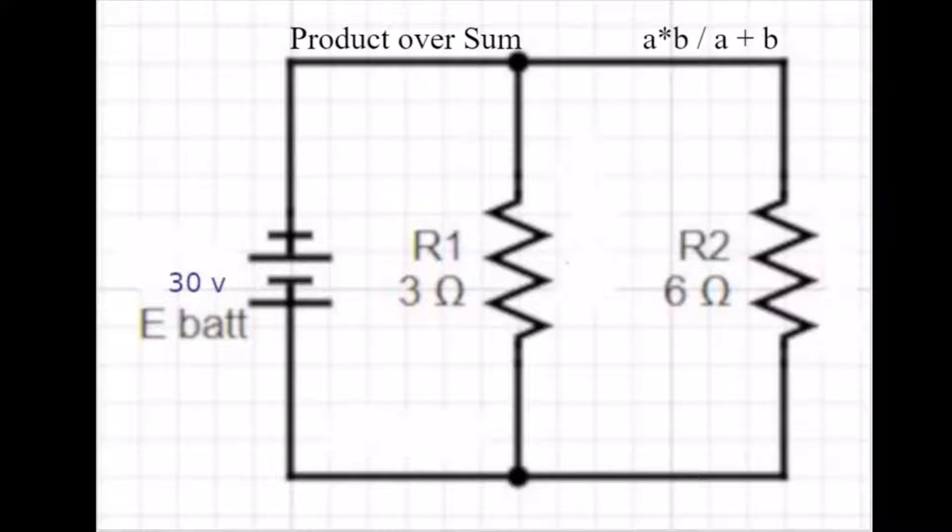If we're only dealing with two of them, there's a very simple formula, and it's referred to as product over sum, or another way of looking at that would be a times b divided by a plus b. So we'll go through, keeping that in mind, and run the numbers here and see how it works out.